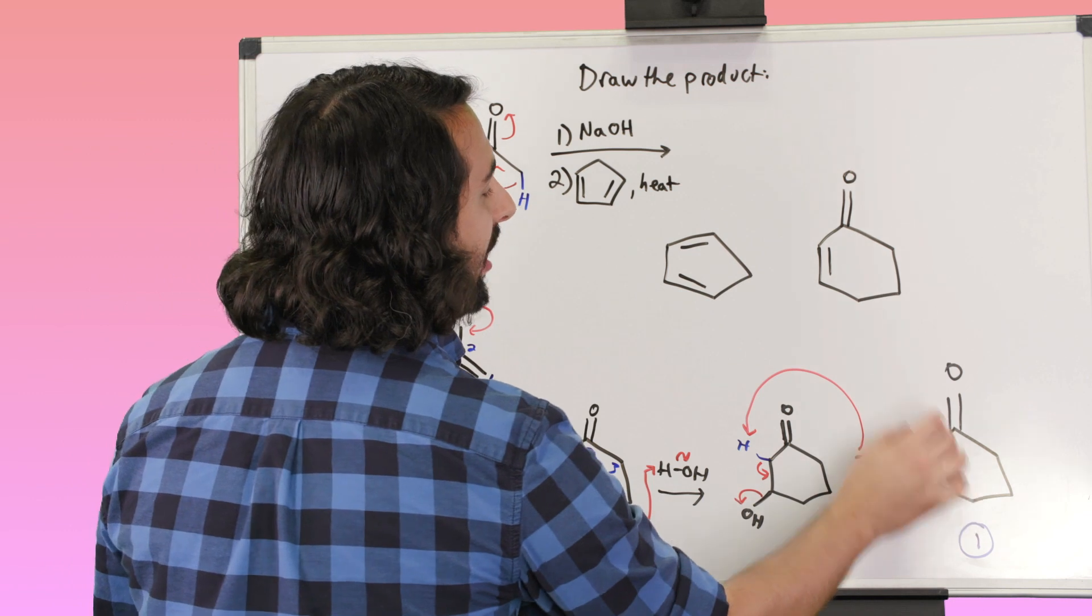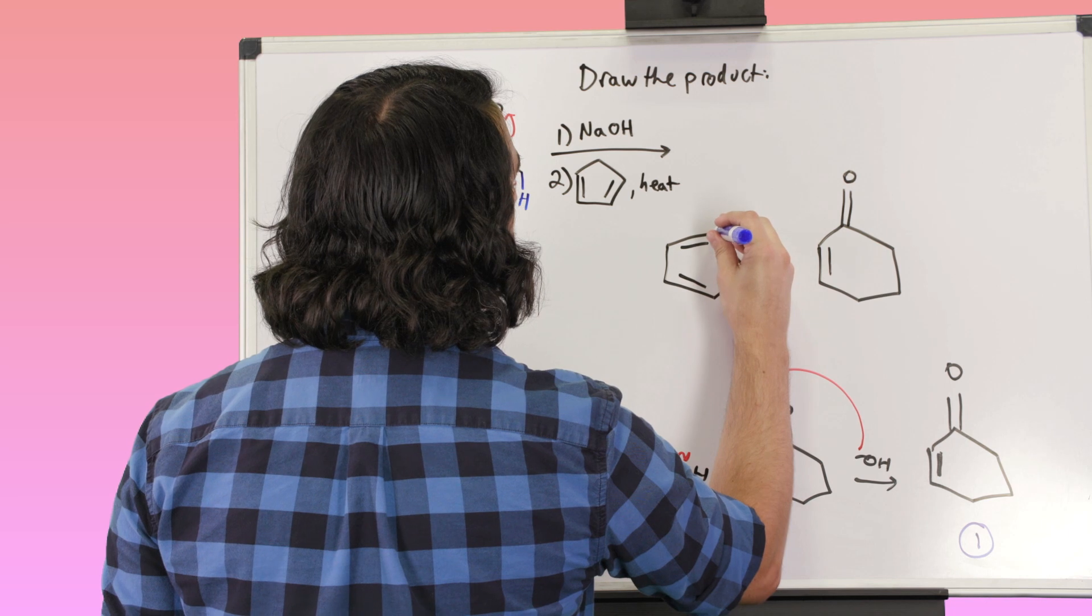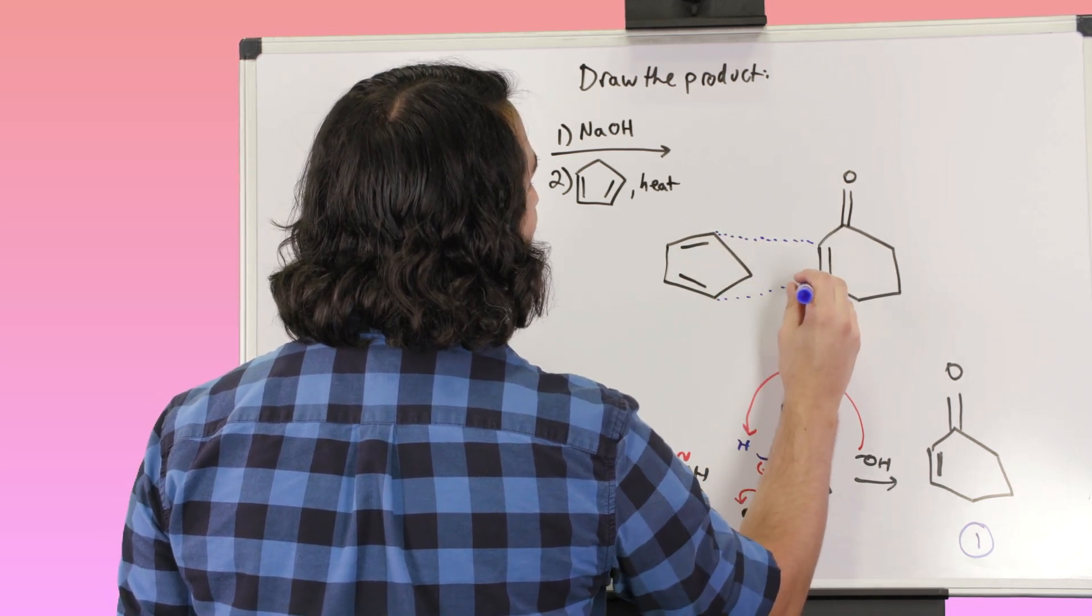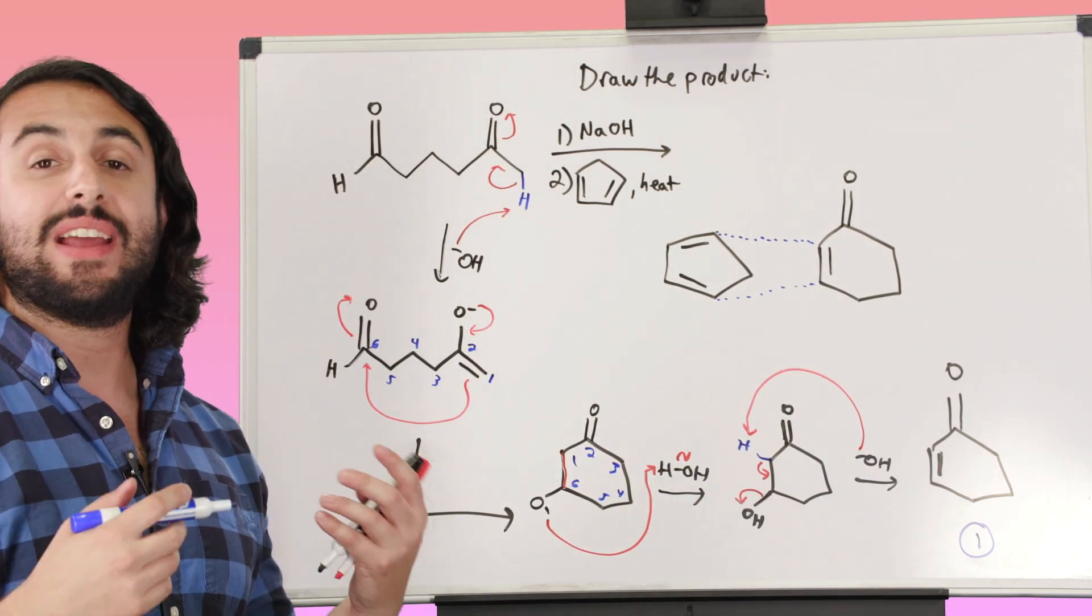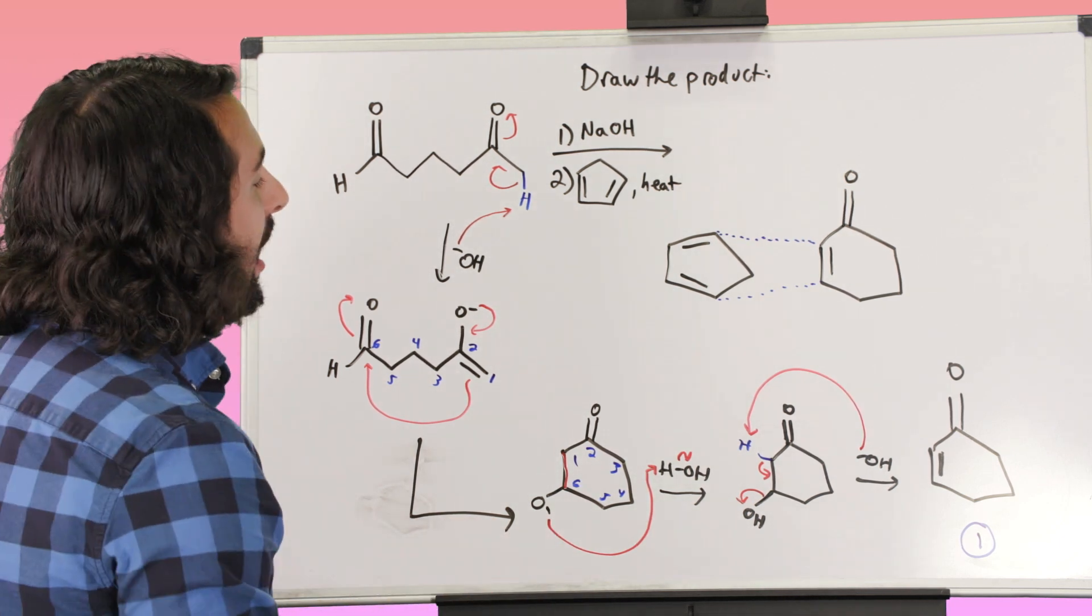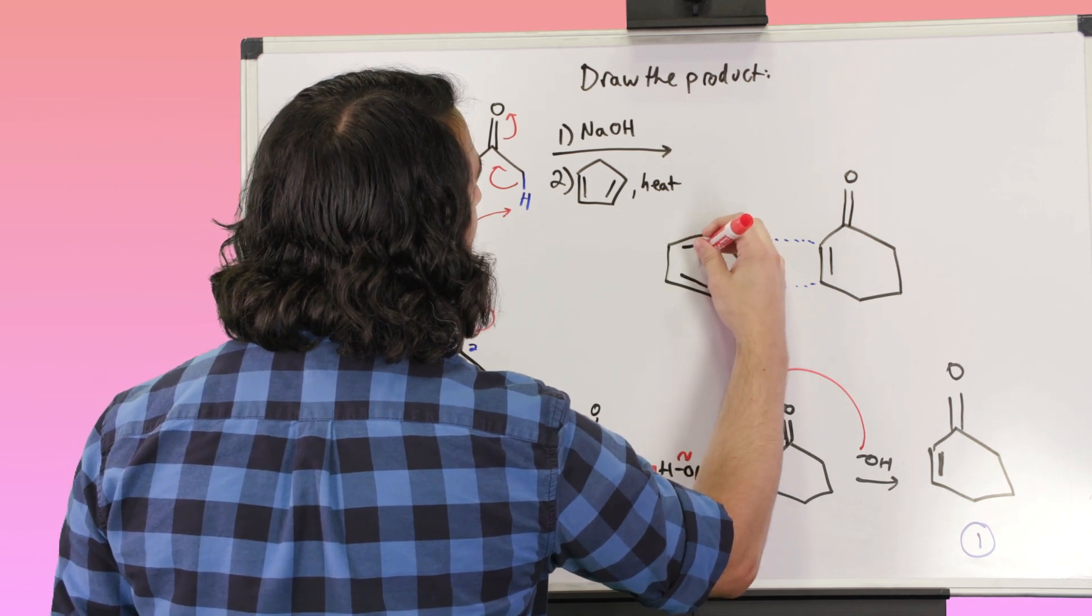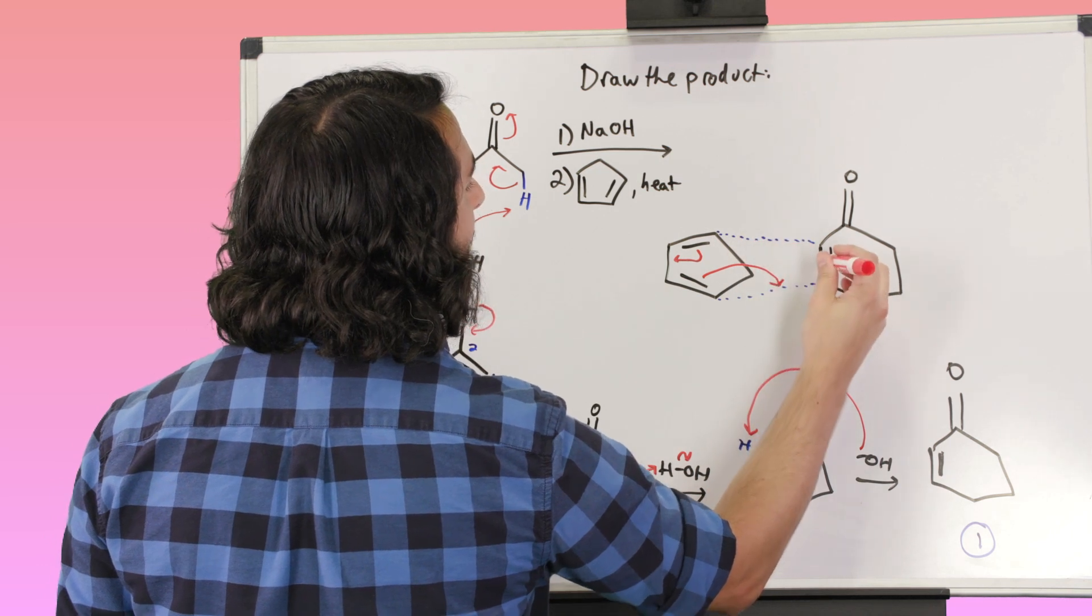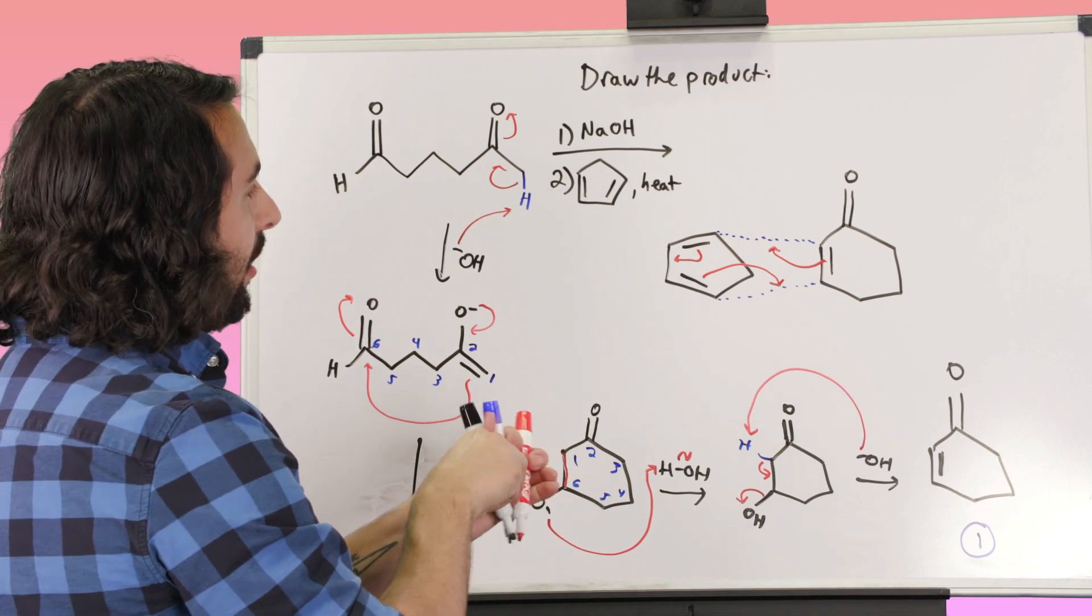And this is possible because of this pi bond in the aldol condensation product. So let's go ahead, whenever we're doing Diels-Alder, we can draw these dashed lines just to guide us because we know we're going to be making a new six-membered ring. If you don't get a six-membered ring when you're doing Diels-Alder, something went wrong because it will always make a new six-membered ring. And all we have to do is shuffle these pi electrons around. This pi bond can become the new pi bond. This pi bond can become a new sigma bond. This pi bond can become a new sigma bond.